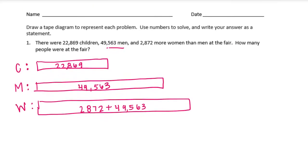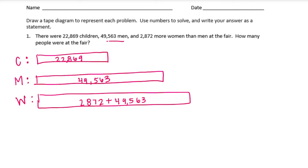I'm going to start by figuring out exactly how many women there were. So for the women, we had 2,872 plus 49,563. Usually I would put the larger number on top, but I'd already started writing 2,872. So 2 plus 3 is 5, 7 plus 6 is 13, carry the 1. 1 plus 8 is 9, plus 5 is 14, carry the 1. 1 plus 2 is 3, plus 9 is 12, carry the 1. 1 plus 4 is 5. So the women, there are 52,435 women.